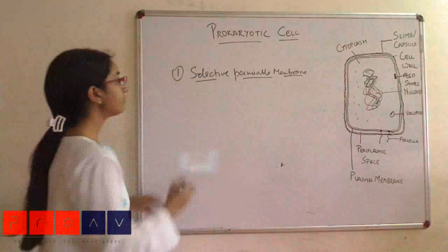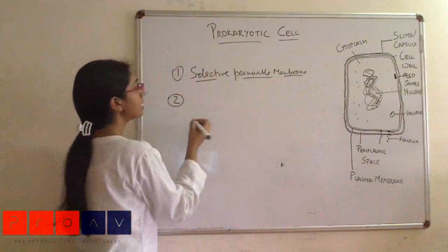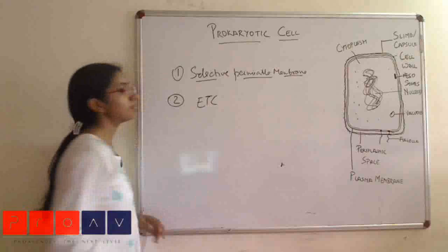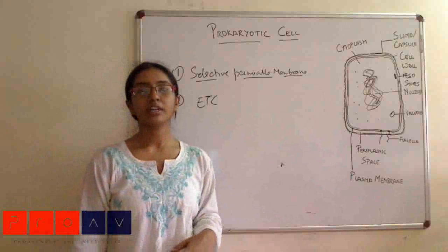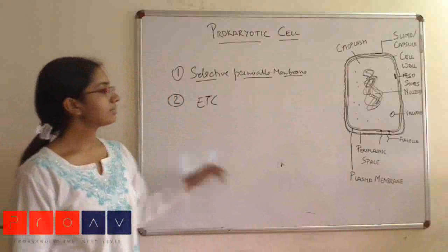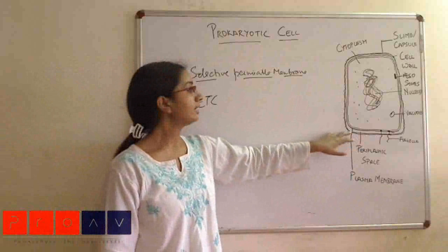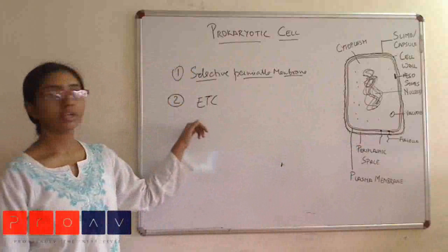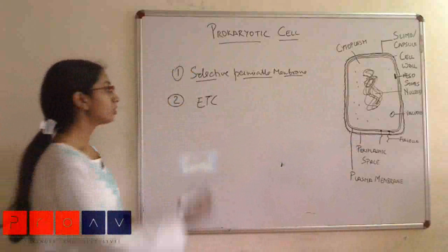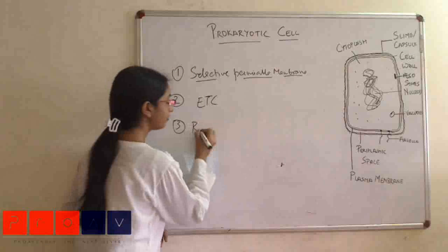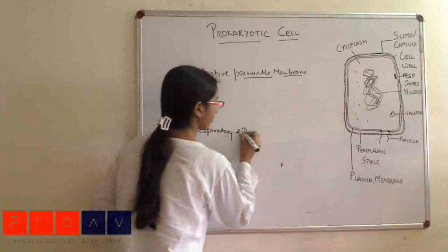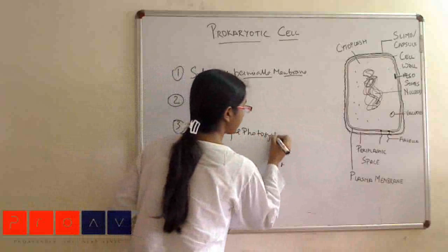The next function is the electron transport chain. In eukaryotes, we have organelles like mitochondria in which oxidation steps occur. But in prokaryotes, these enzymes are present in the periplasmic space and the associated plasma membrane has the electron transport chain enzymes embedded. We have the respiratory as well as the photosynthetic enzymes in the plasma membrane.